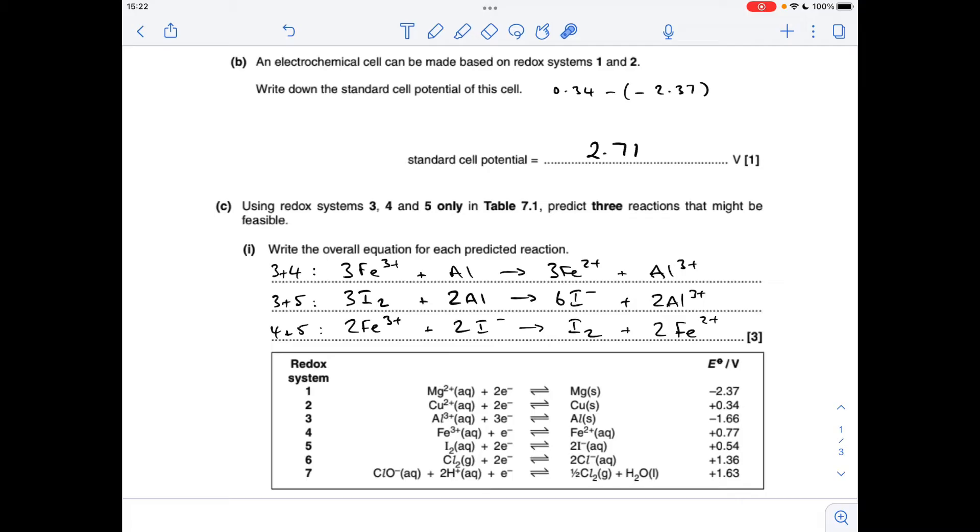Systems 4 and 5 now, so 0.77 versus 0.54. The iron one is going to run left to right in the forwards direction, and that one's going to go backwards. We need to double the iron one to get the electrons to cancel, which gives us that equation there.